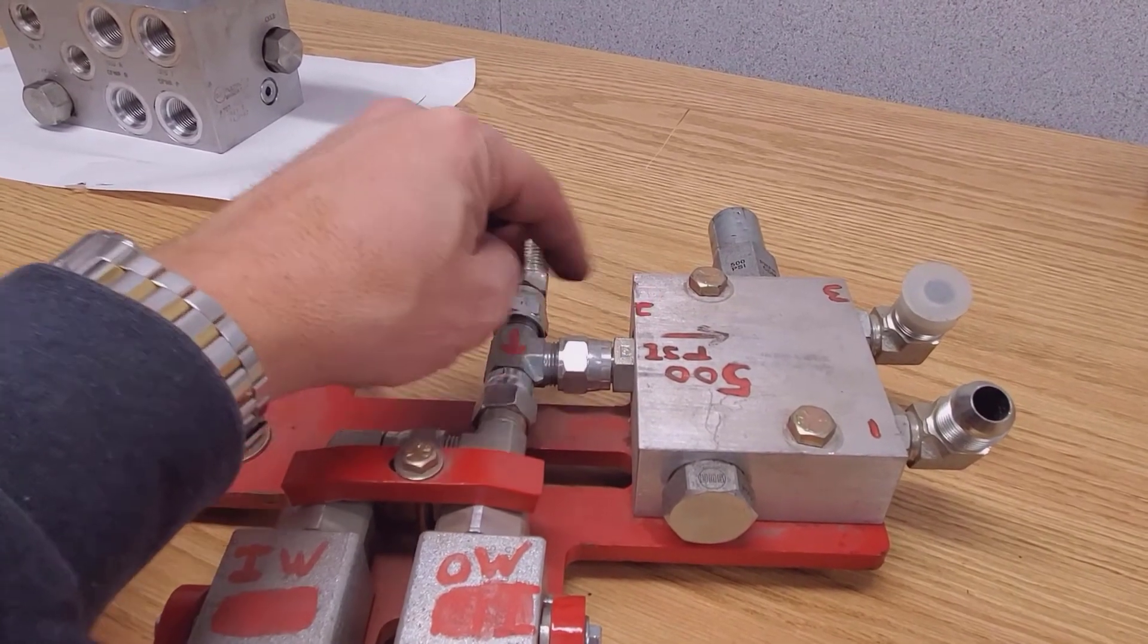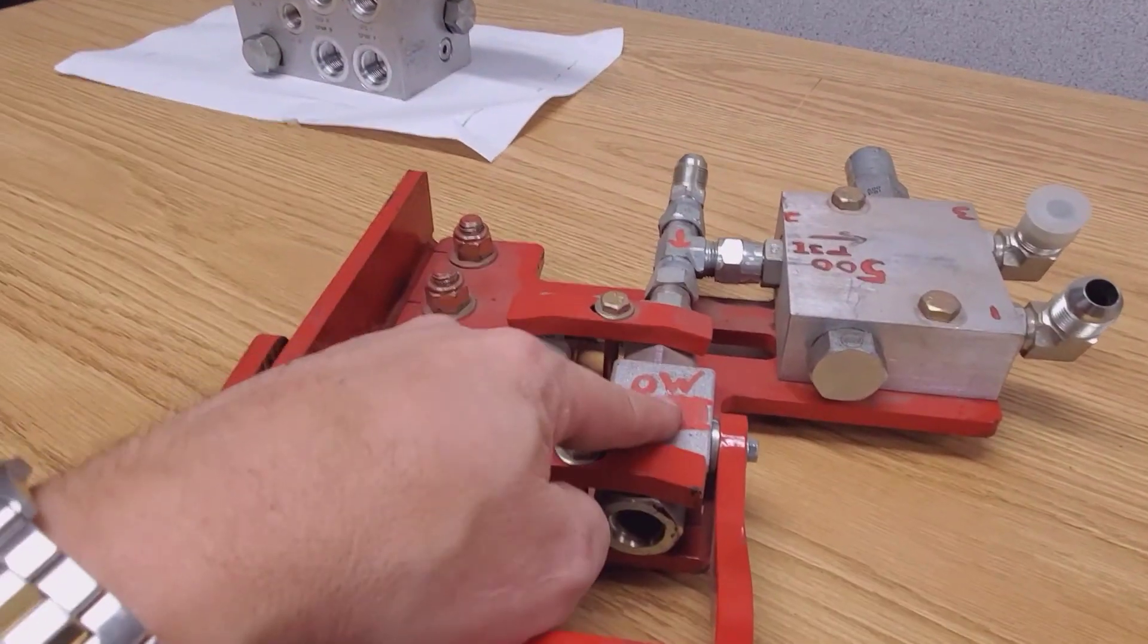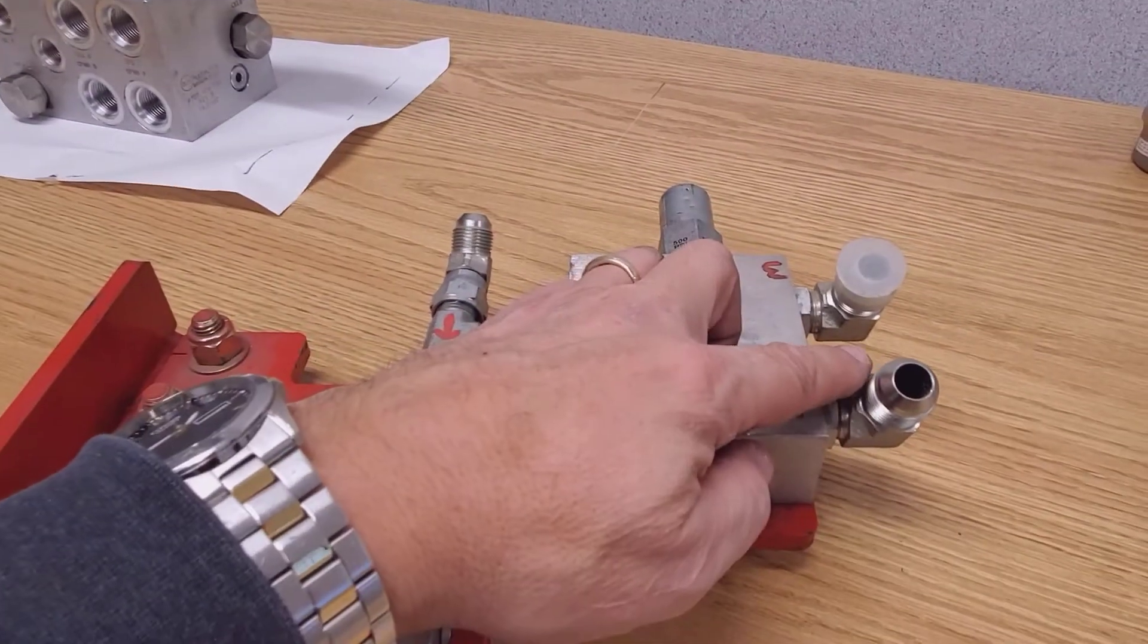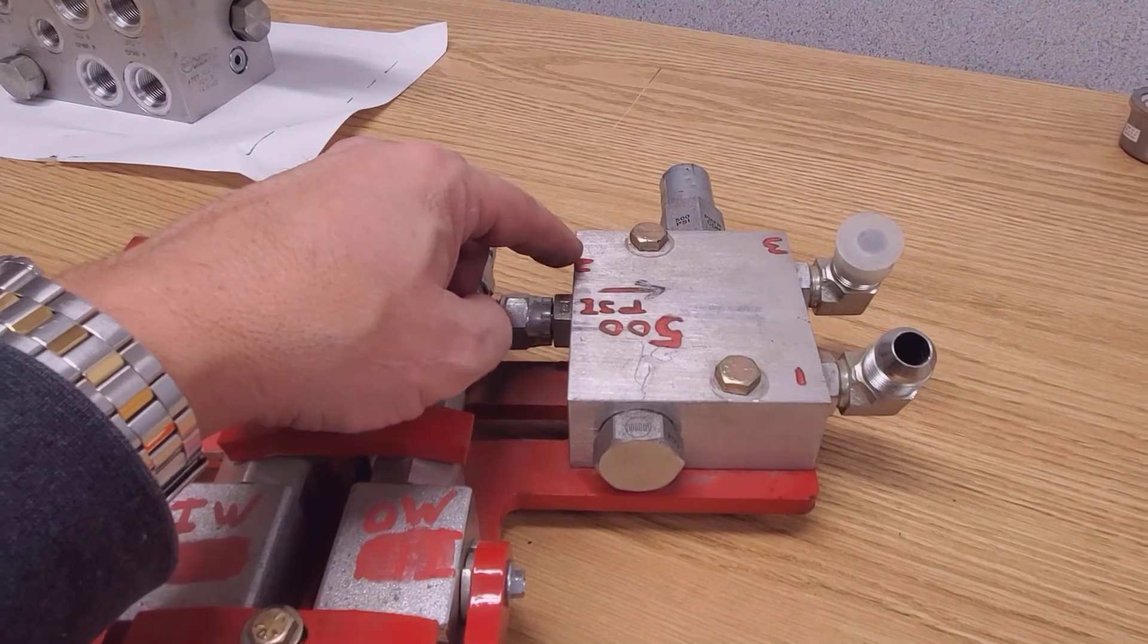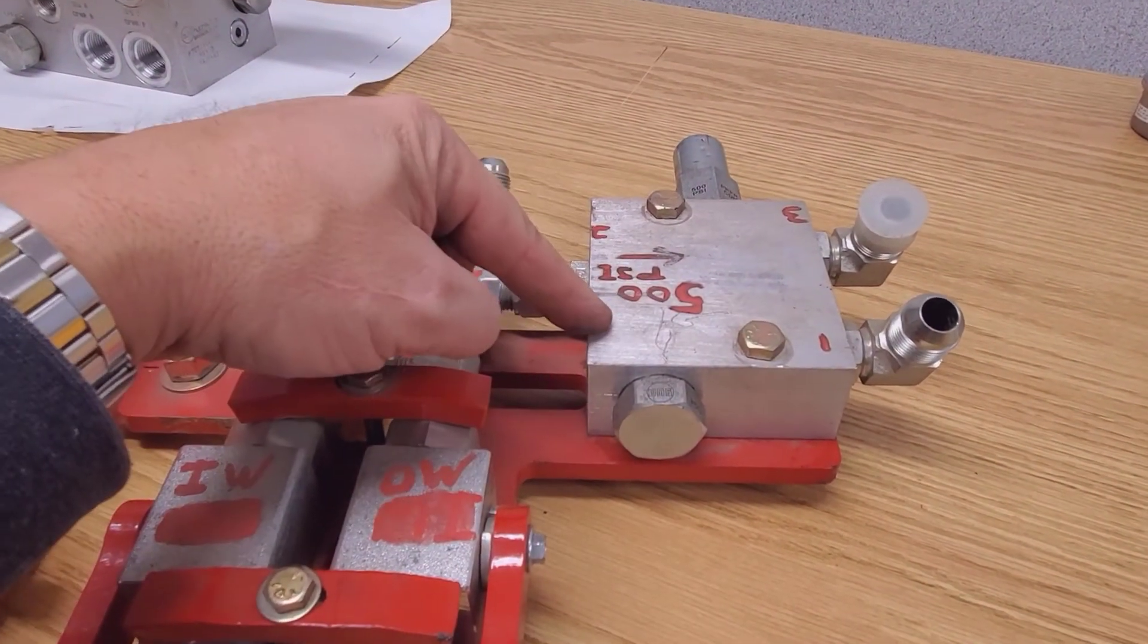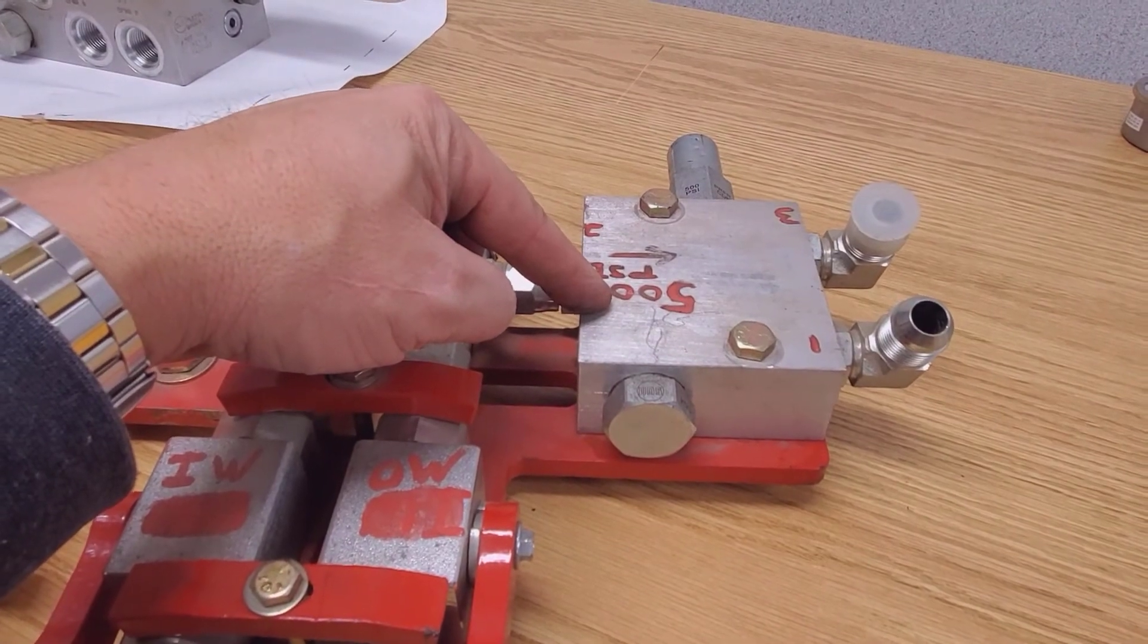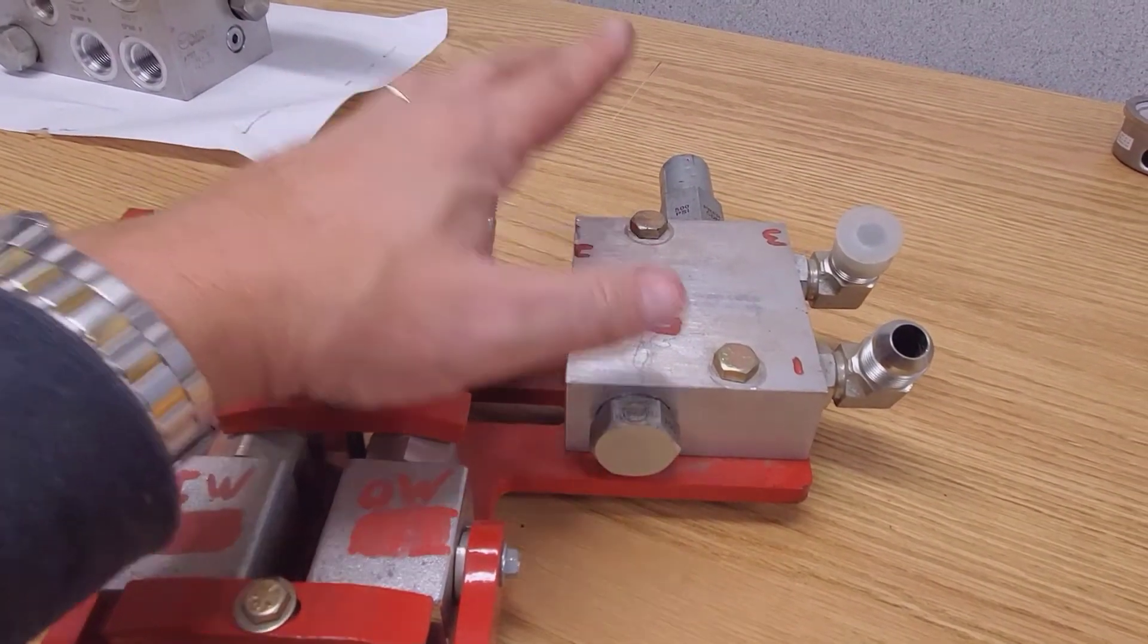So to do so, when this is closed and this is stroked to the end, the oil is forced through here to our inner wing cylinder at a reduced pressure, 500 psi or so, 500 to 700 psi. So it's reduced pressure.